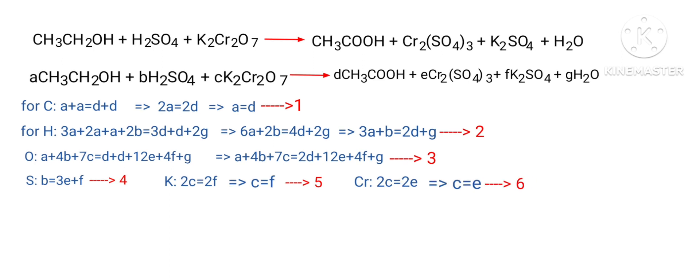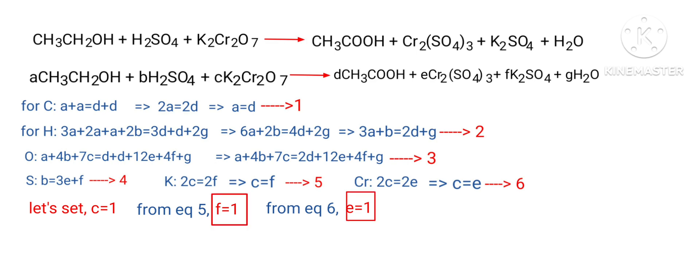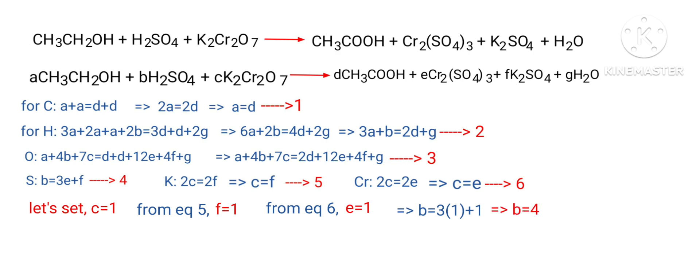Now solve the six simultaneous equations. It looks almost impossible, but coefficients must be integers. Let C equal 1. From Equation 5, F equals 1. From Equation 6, E equals 1. Applying E and F into Equation 4: B equals 3×1 plus 1, so B equals 4.